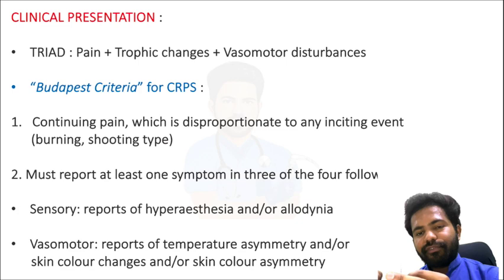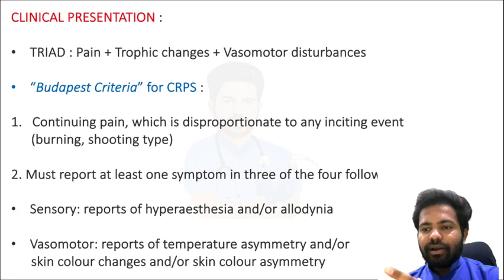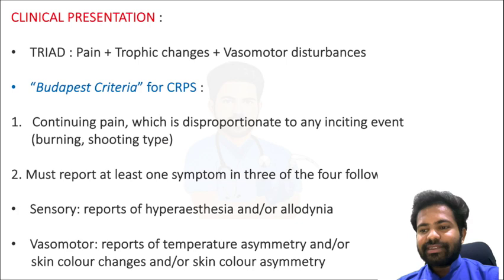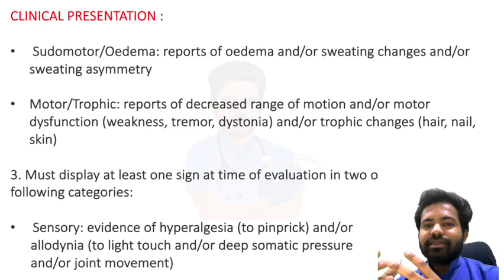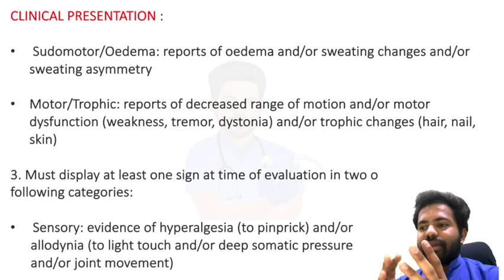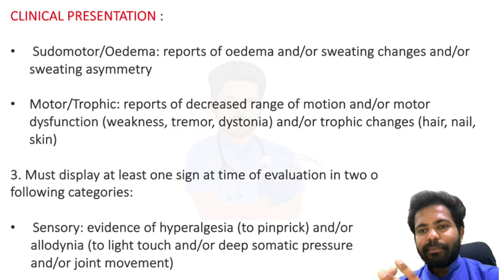For vasomotor symptoms: temperature asymmetry — the CRPS limb is usually warmer than the other limb — and skin color changes or asymmetry. For pseudomotor changes: swelling and edema of the affected limb. For motor or trophic changes: changes in hair growth, nails, and skin character, as well as differences in muscle tone, dystonia, tremors, and muscle weakness.